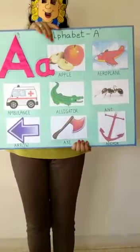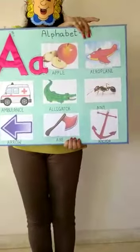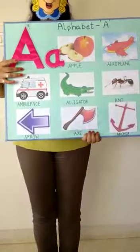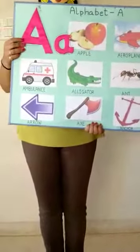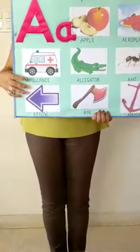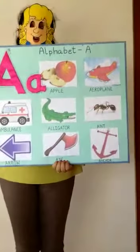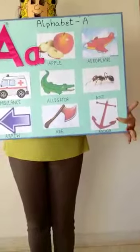A for apple, A for aeroplane, A for ambulance, and A for alligator, A for ant, and A for arrow, A for axe, and A for anchor.